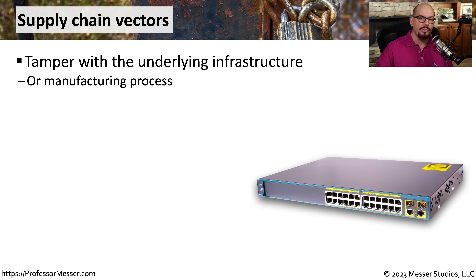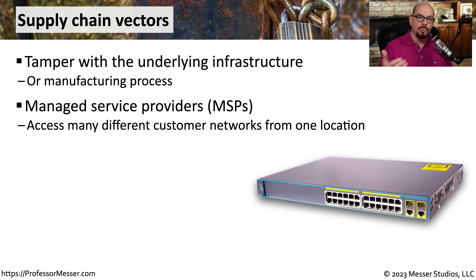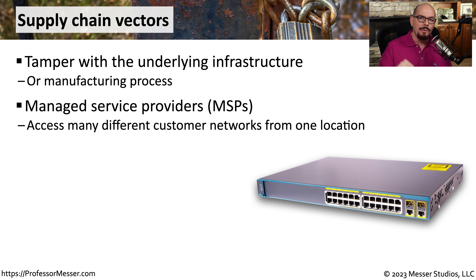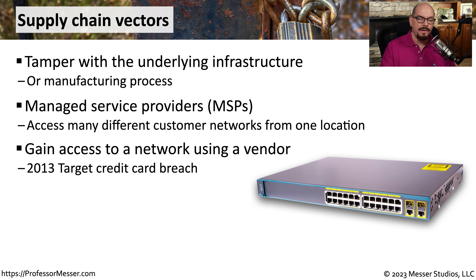Sometimes these threat vectors appear on your network through the front door by way of a supply chain vector. This allows a third party to gain access to your infrastructure by riding inside existing equipment that you're installing. This might be added during the manufacturing process without the manufacturer even knowing, or it may be added after manufacturing by a third party wanting access to your systems. Sometimes these threat vectors exist because you're working with a third party that is part of your supply chain — for example, your network may be managed by an MSP, a managed service provider. If an attacker gains access to the MSP, they will then have access to your systems. This was the threat vector used by attackers who gained access to Target's network in 2013 and installed malware on all of their point-of-sale systems to steal credit card numbers.